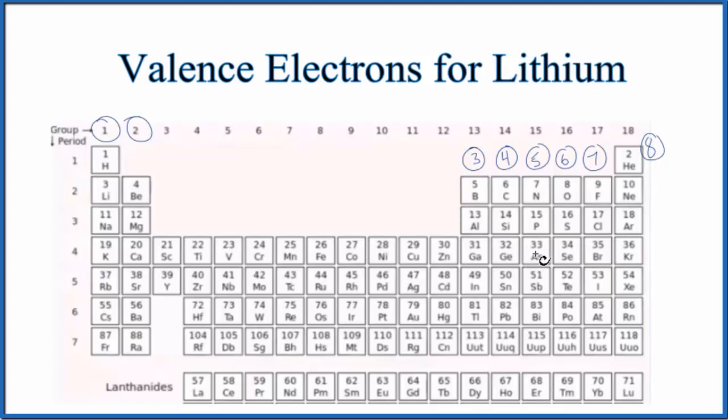The first is just to look at the periodic table. So when we look at the periodic table here, lithium right here, it's in group one. So all of the elements here in group one, they have one valence electron. So lithium, it has just one valence electron.